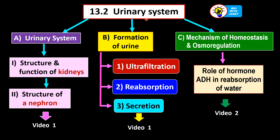Here is an overview of subtopic 13.2, the urinary system. Firstly, we're going to discuss the structure and the parts of the urinary system plus their functions. Then we will zoom in on the kidneys to study the structure and function of the kidneys. In the kidneys, there are nephrons, which are the basic units of the kidneys that function to produce the urine. We will be studying the structure of the nephron and the functions of the various parts. Next, we will be studying the formation of urine — three processes are involved: ultrafiltration, reabsorption, and secretion.